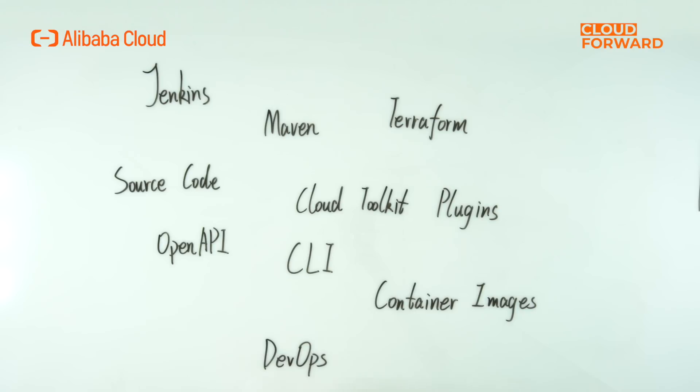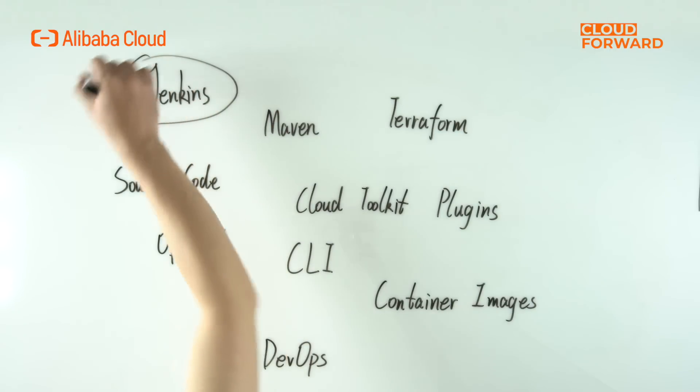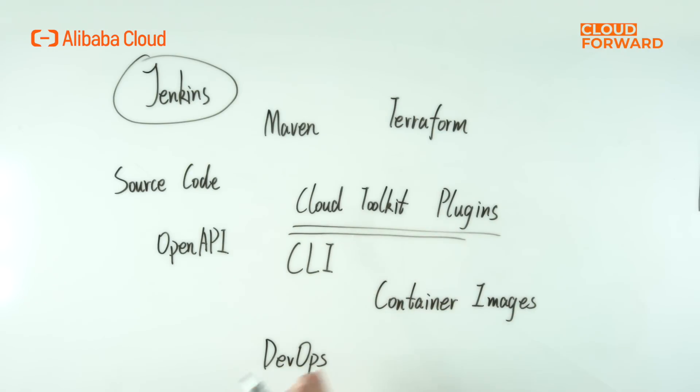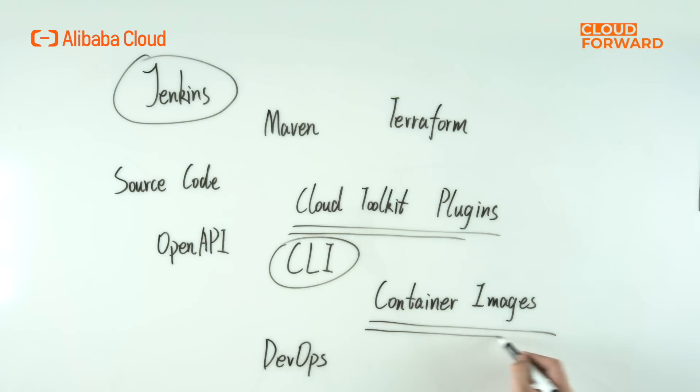In addition, SAE also supports multiple deployment methods such as Jenkins, Maven, Terraform, Source Code, Cloud Toolkit Plugins, OpenAPI, CLI, and Container Images. It can help you automate the complete DevOps process from code submission to application and task deployment, while minimizing changes to your existing work habits.